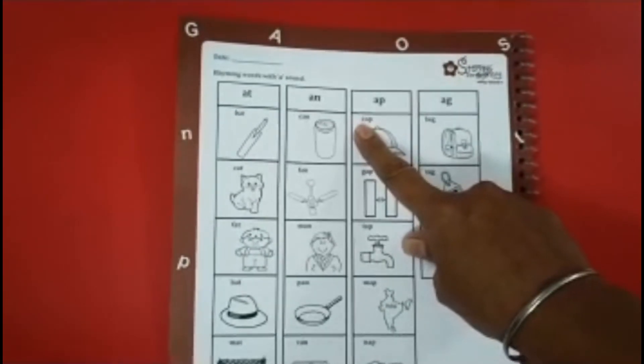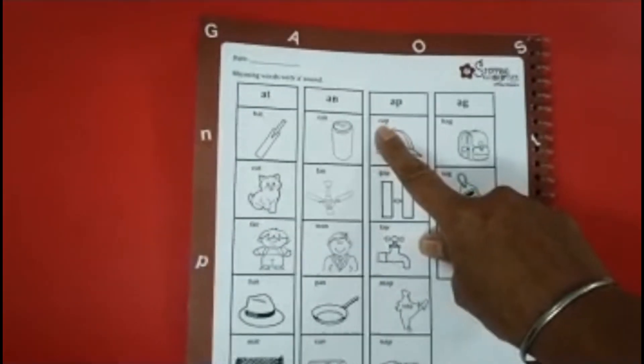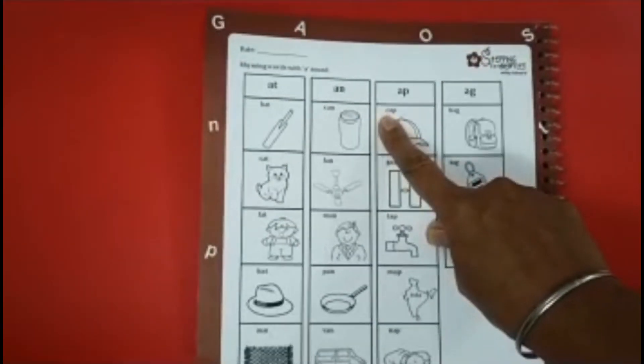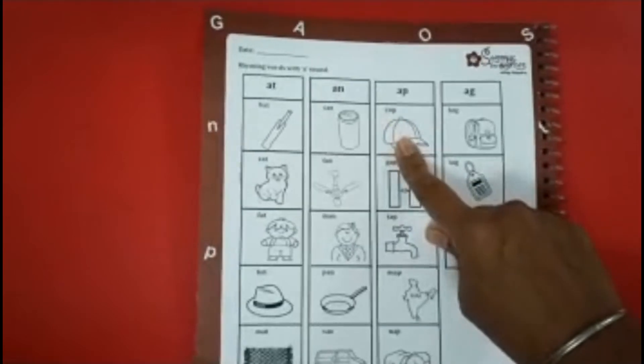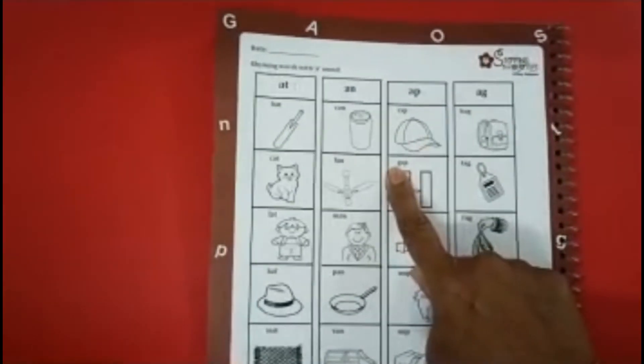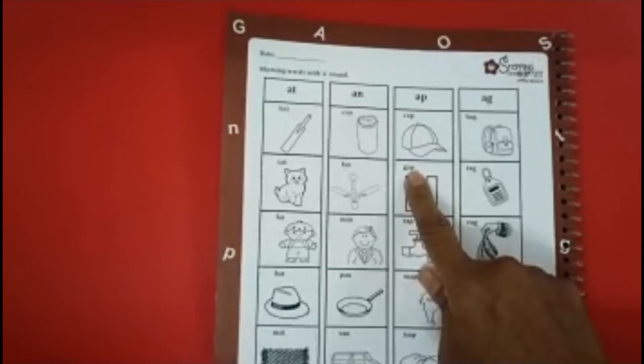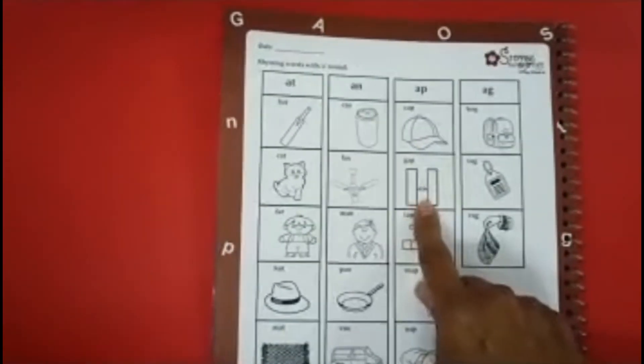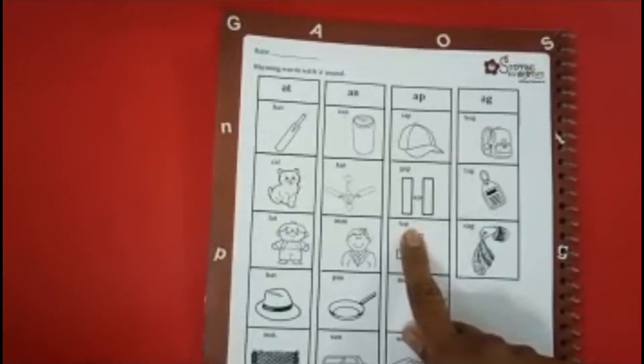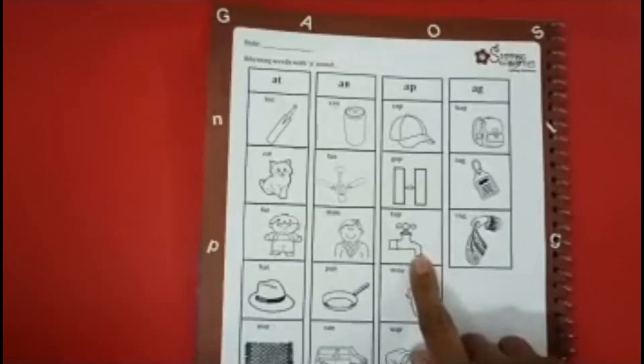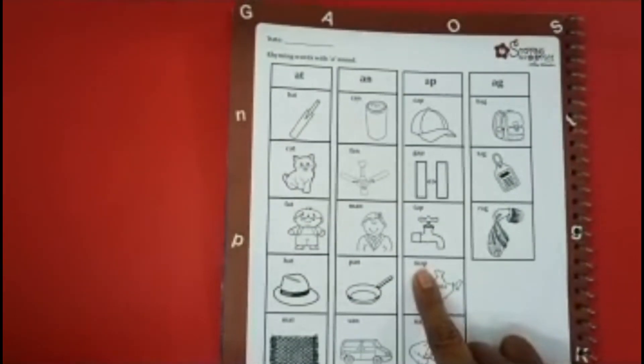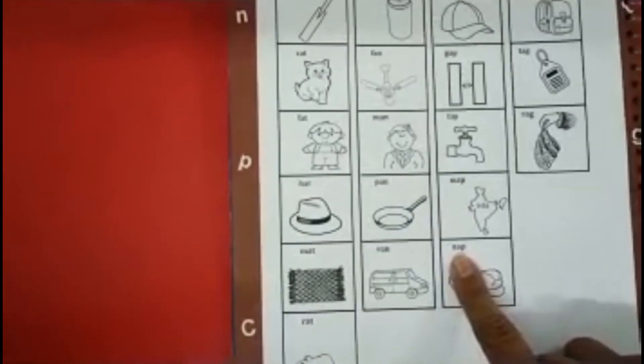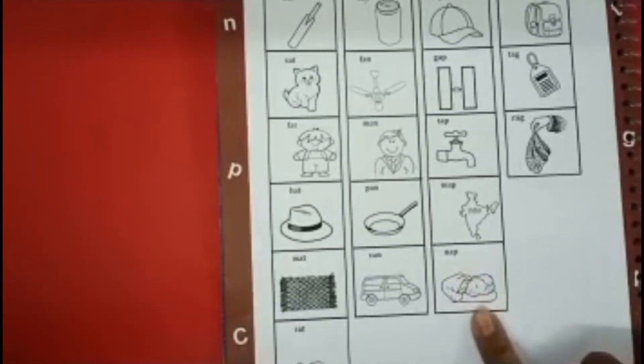C says C, A says A and P says P. So we will read it as K, A, P, gap. Gap. This is the space in between, we call it gap. T, A, P, tap. M, A, P, map. N, A, P, nap.